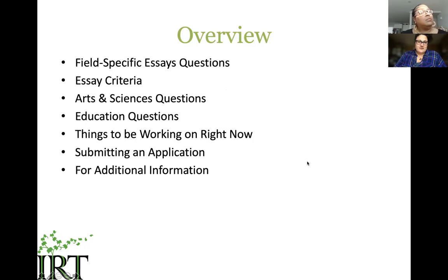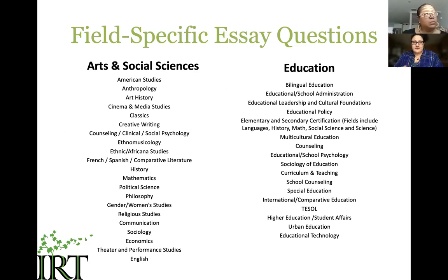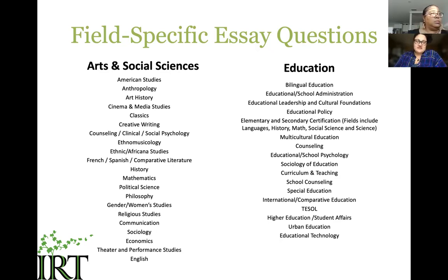Our application has two sets of essay questions, and you are not required to respond to both — only one set. The two sets are broken up by arts and sciences applicants and education applicants. If you see your intended graduate school discipline listed in the arts and sciences column, you would only need to respond to the arts and sciences questions, and vice versa for education.